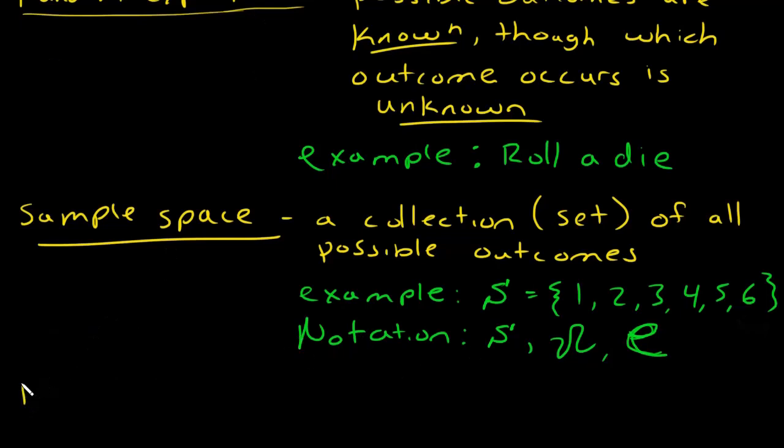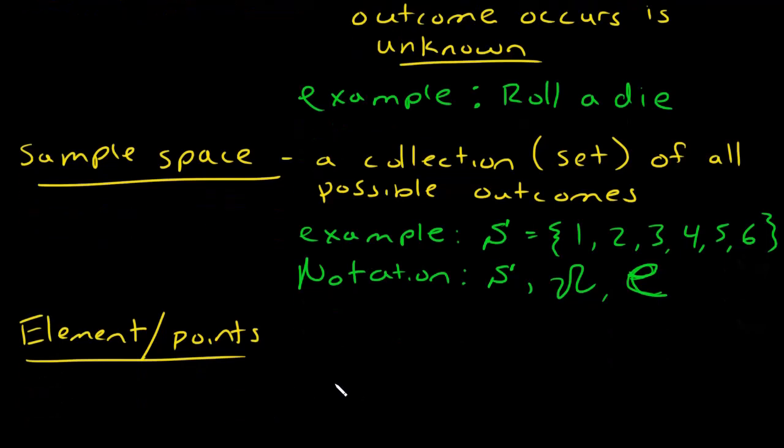Next we have elements. Element or points, same thing, you might see it referred to either way. This is one possible outcome. For example, if you were to roll a die, then one possible outcome may be S equals two. Say you rolled a two.